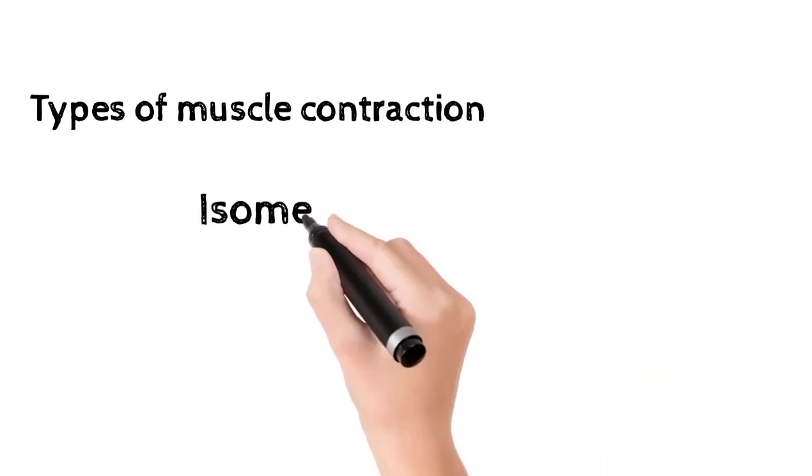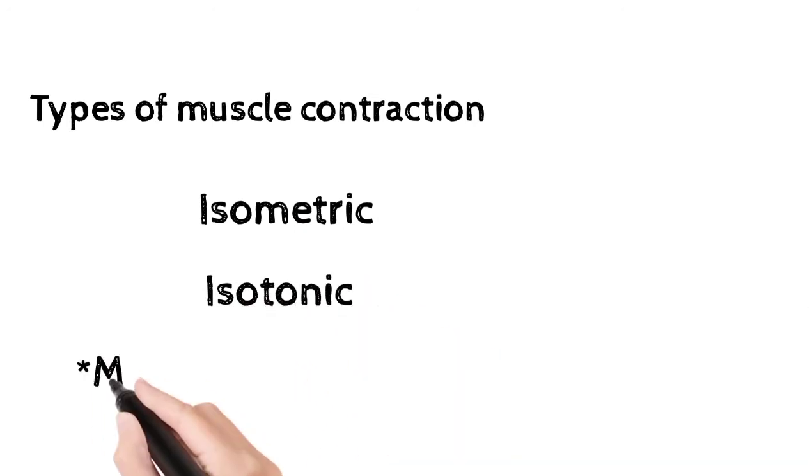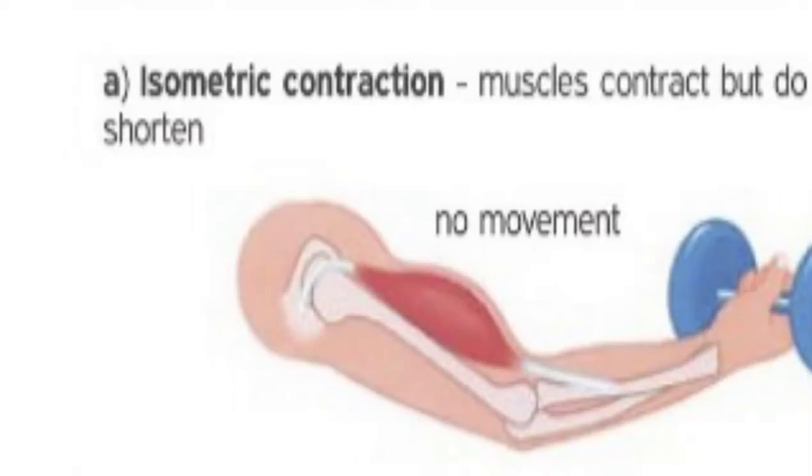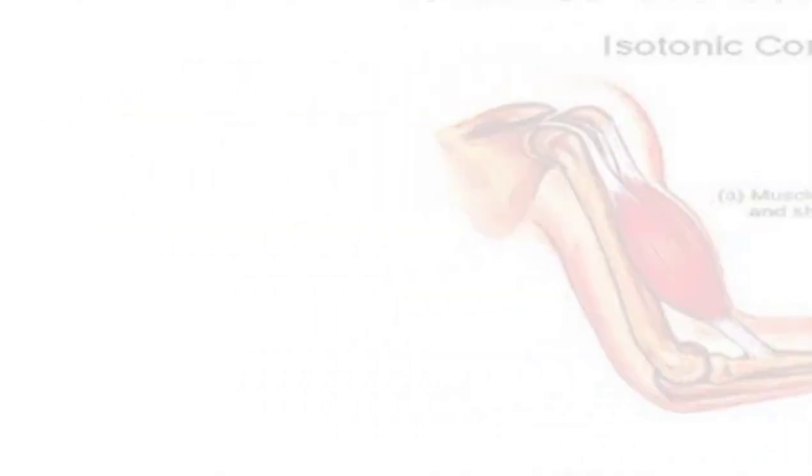Whereas in isotonic contraction, there is a change in the lengthening or shortening of muscle. It helps maintain posture of the body.